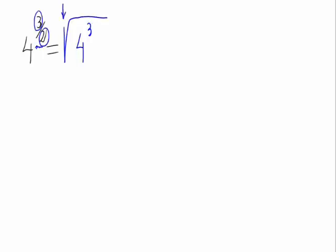That means the square root of 4 cubed. As the result is not going to have any decimals, we can write the square root of 4 and write out of the parenthesis the exponent, 3.